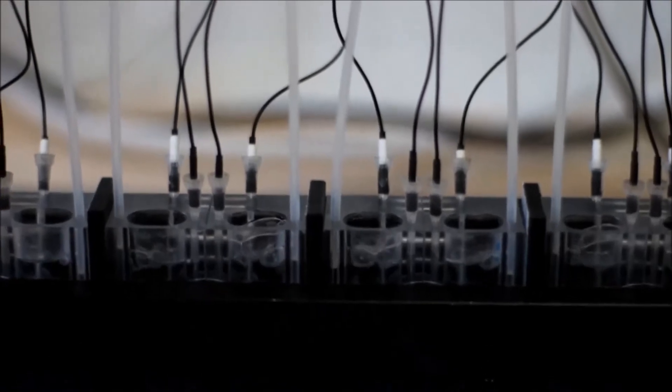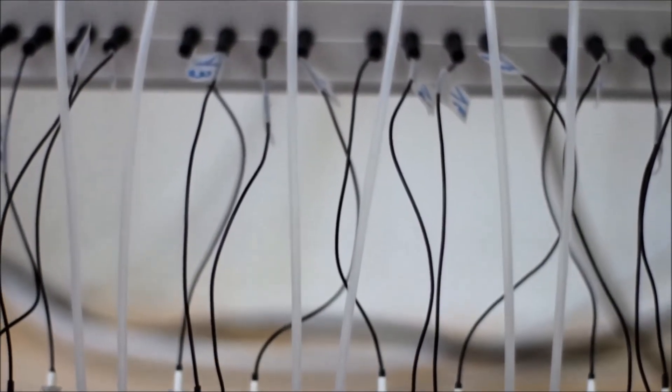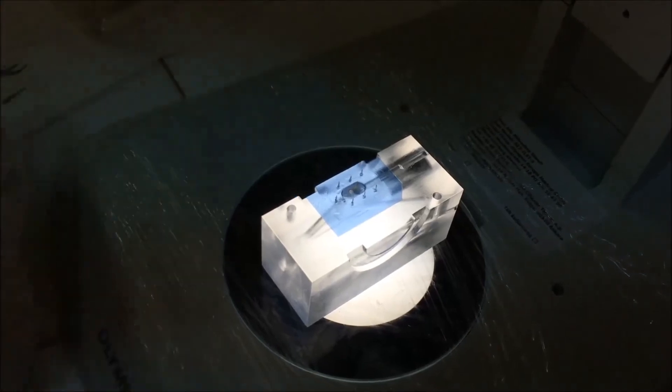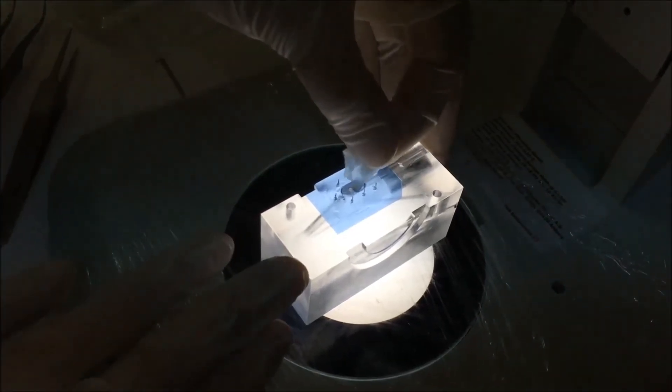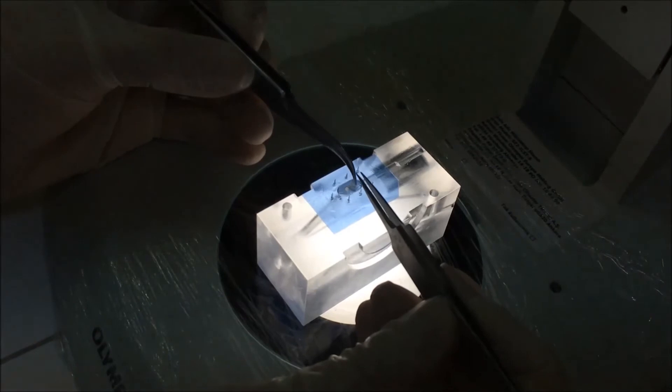The Ussing chamber system should be calibrated for 30 to 40 minutes. Aspirate the buffer, then mount the biopsy into the chamber attentively under a light microscope.